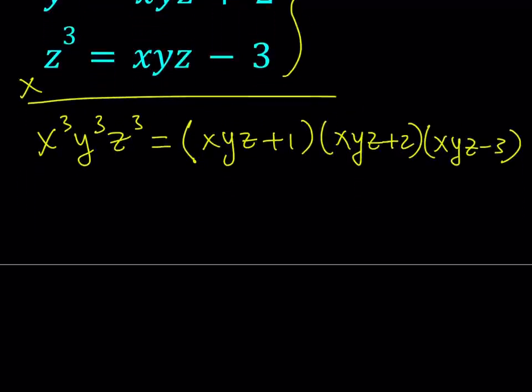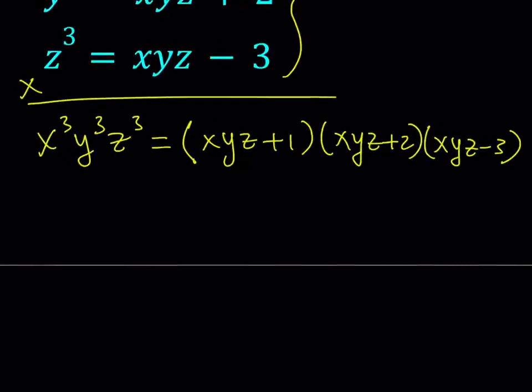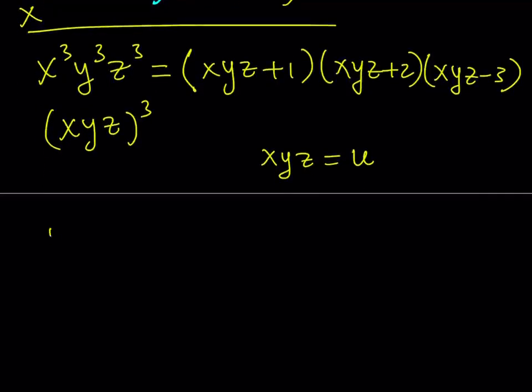Now, here, we can use, since x cubed y cubed z cubed can be written as xyz to the third power, we can actually use substitution here. So let's go ahead and set xyz equal to u. And we get u cubed is equal to u plus 1 times u plus 2 times u minus 3.